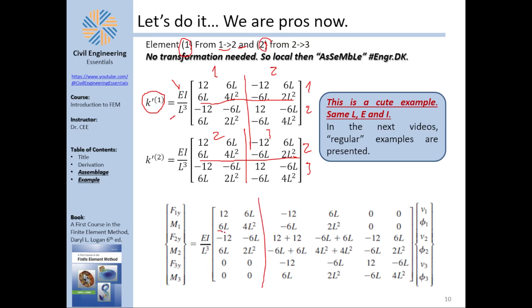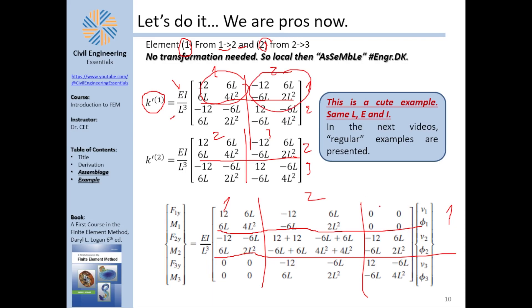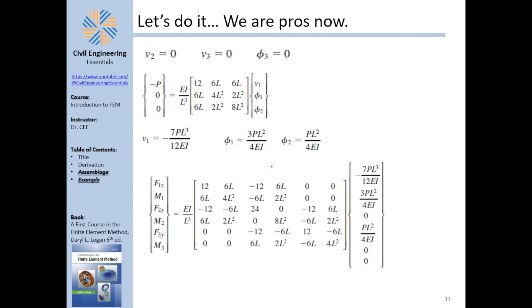Assembling the global stiffness matrix: node one with node one gives only element one's contribution; node two with node one and node two with three come from respective elements; node two with node two gets contributions from both elements (superimposed); node three with three gets only element two's contribution. Off-diagonal blocks with no connection are zero. This is a standard assembly process.